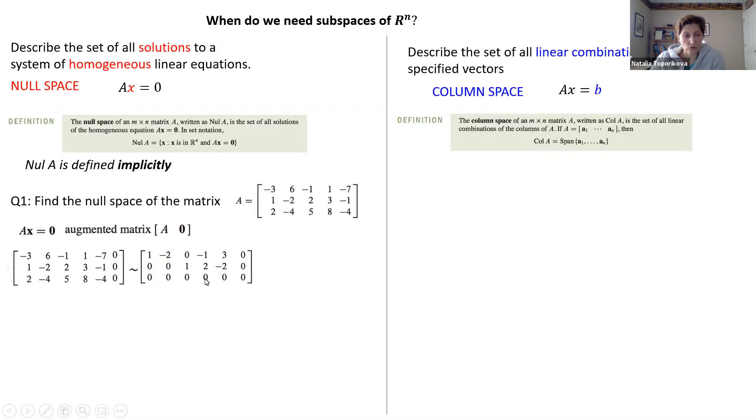Then we reduce it to the echelon form. And our reduction actually gives us pretty nice results because we have three free variables. So, we have three columns which do not have a pivot, which means that x2, x4, x5 are our free variables. They can be absolutely anything.